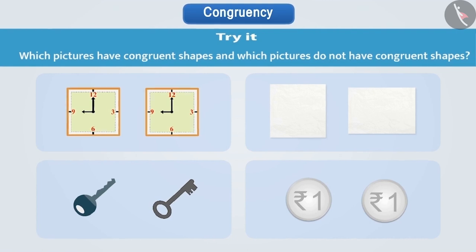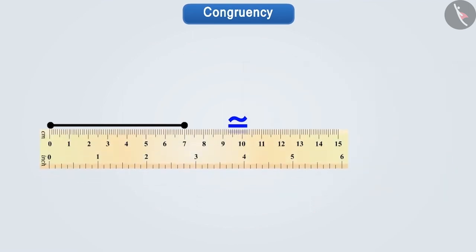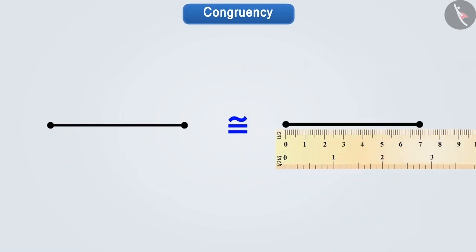Can you tell how can we make a congruent shape of a given shape? Let us tell you. We can make it by trace copy and using carbon paper. With the help of geometry, we can draw a congruent shape of any shape by composition.